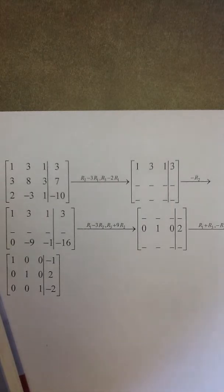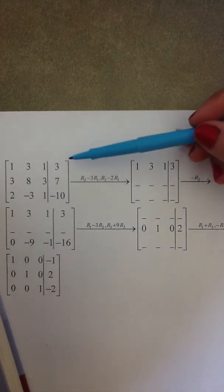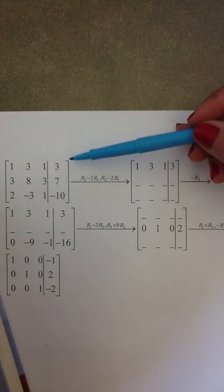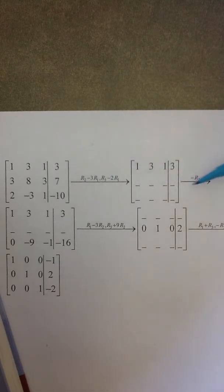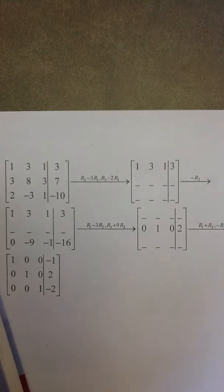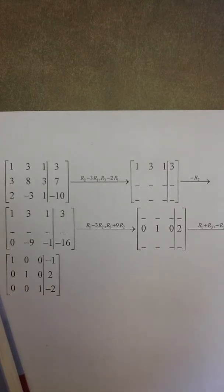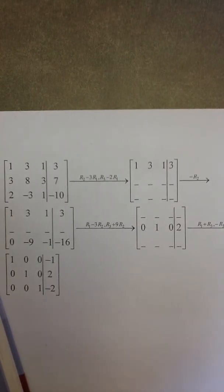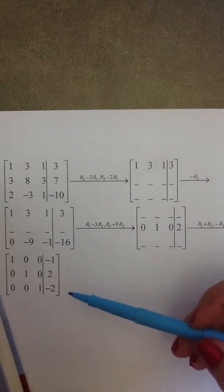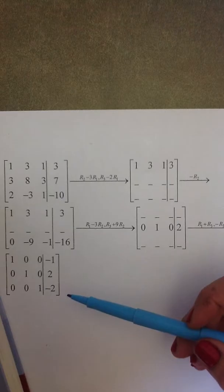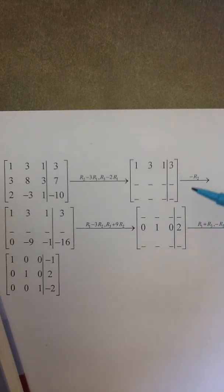The next example is a system of three equations with three variables represented by an augmented matrix. We've been given the seven row operations necessary to transform the original augmented matrix into its most reduced form so that we can identify the answer.